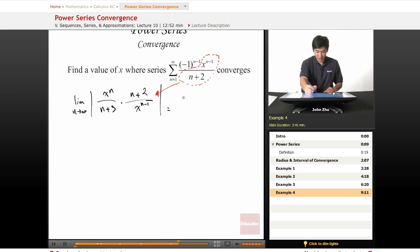Simplifying this, we have the limit as n approaches infinity of x(n+2)/(n+3). This simplifies down to the limit as n approaches infinity of x. So we know right away that |x| must be less than 1 to converge.